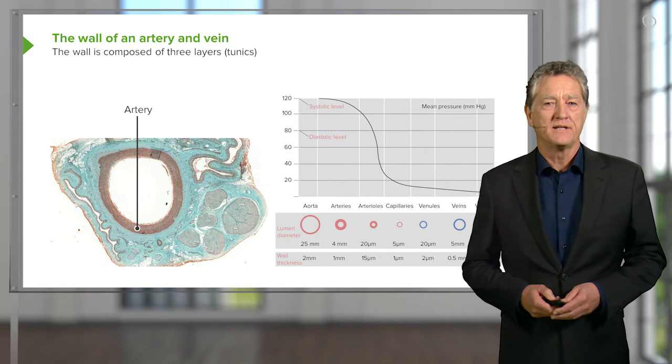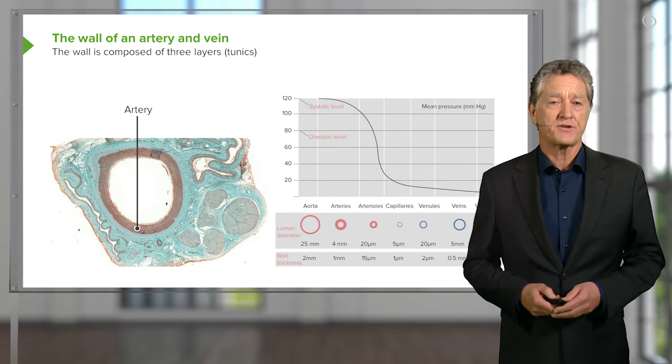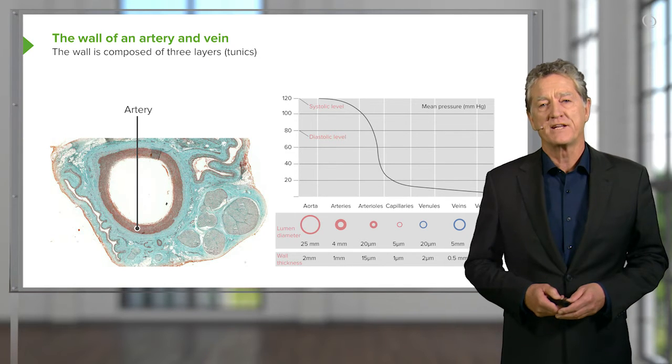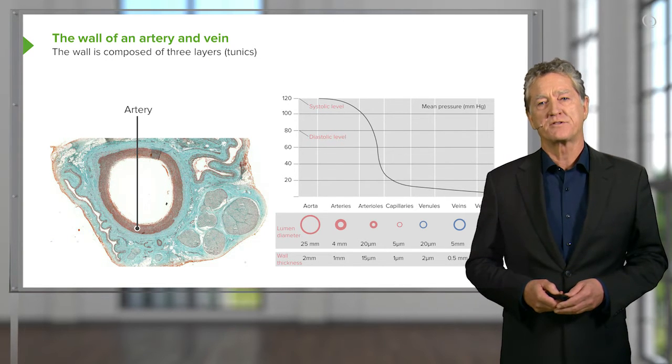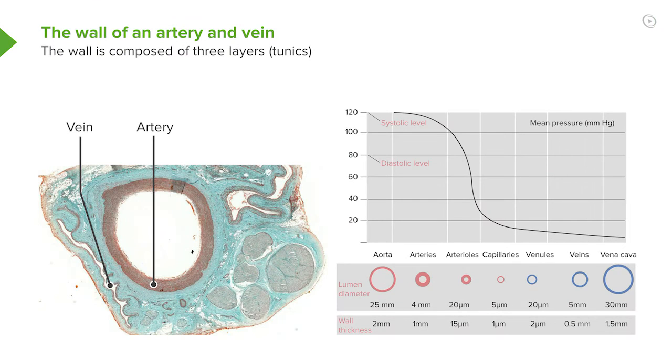As you see here in the image, here is a section through the artery. It's got a nice circular profile because of the pressure of the blood inside it passing down through the tissues. If you look at a vein, however, right next to it, the lumens collapse down.